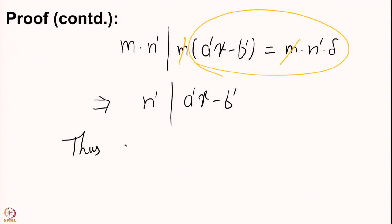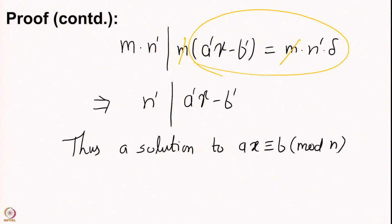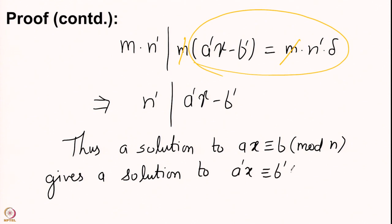Thus a solution to ax ≡ b mod n gives a solution to a prime x ≡ b prime mod n prime. We have proved this in both directions. The existence of solutions for both congruences are equivalent. The number of solutions may change — once you cancel the GCD d, the smaller equation will have GCD 1 and therefore a unique solution, whereas the larger equation has d solutions.